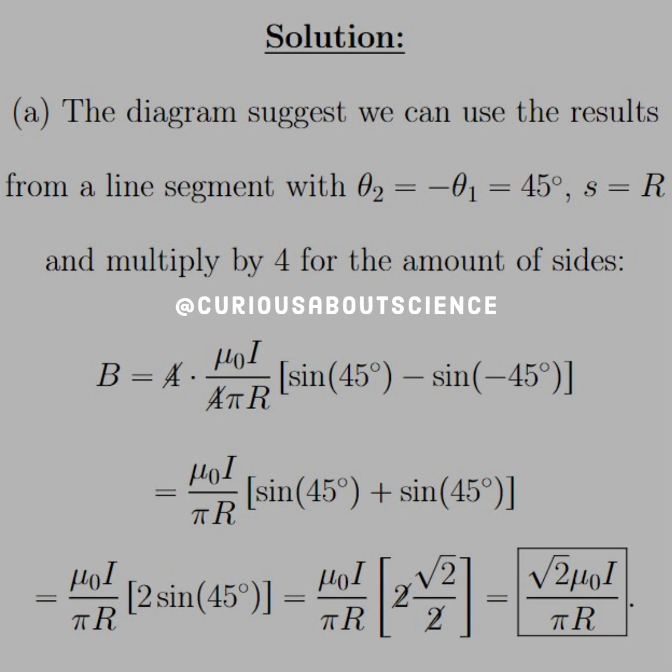And thus, you see we have 2 copies of sine 45. So, they combine down. And what is sine of 45 degrees but root 2 over 2? So, the 2's cancel, thus leaving us with the field at the center equal to square root of 2 mu naught times I divided by pi R.